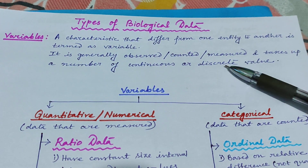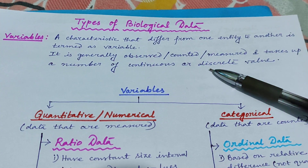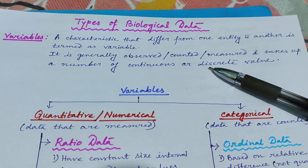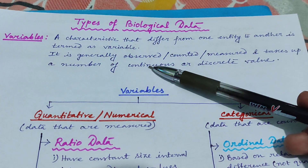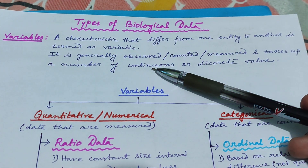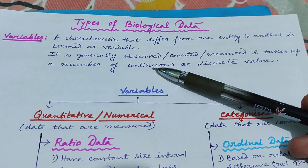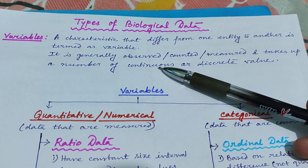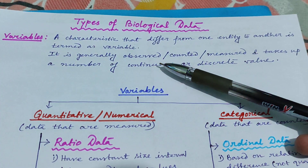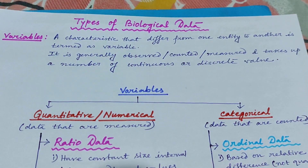A variable may have distinct or discrete values like 1, 2, 3, 4, or it may have a continuous value like 50.15, 50.151, 50.152, and so on. So these are what variables are.